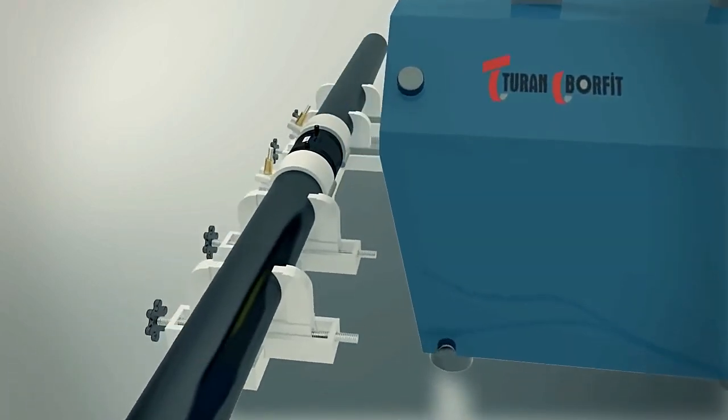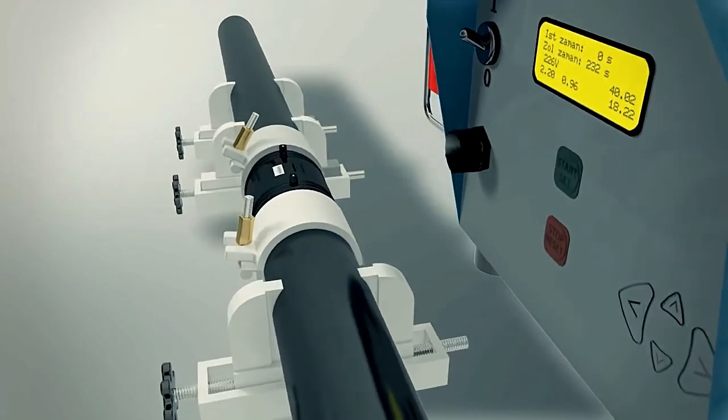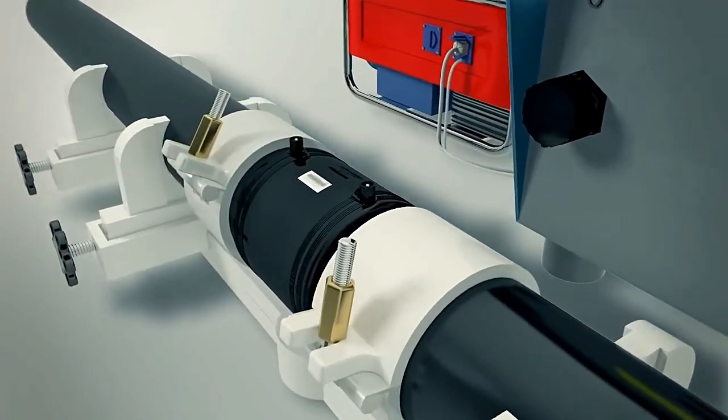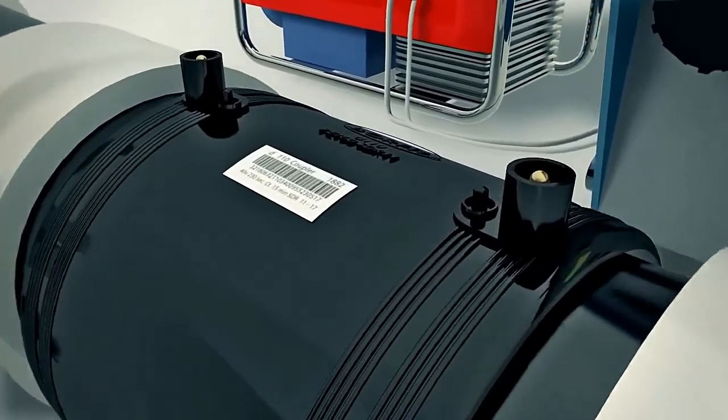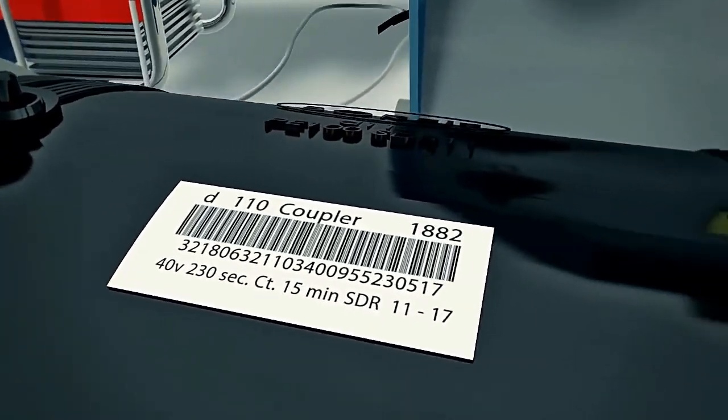The correct cooling time is shown on the barcode label on each fitting. At the end of the cooling, you may dismantle the re-rounding equipment and pipe centralizer.